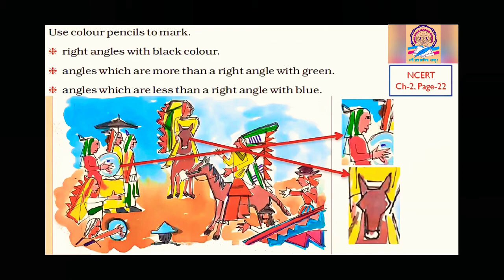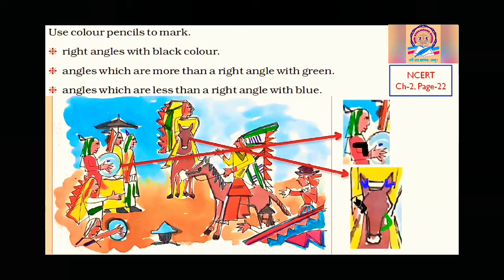I am showing a few more. Exactly on his arm, it is 90 degrees. On his ear, it is less than 90 degrees. This is again exactly 90 degrees, and this is more than 90 degrees. Blue is for less than 90, green for more than 90, and black for exactly 90 degrees. In this way you can mark any angles. Complete this in your notebook.